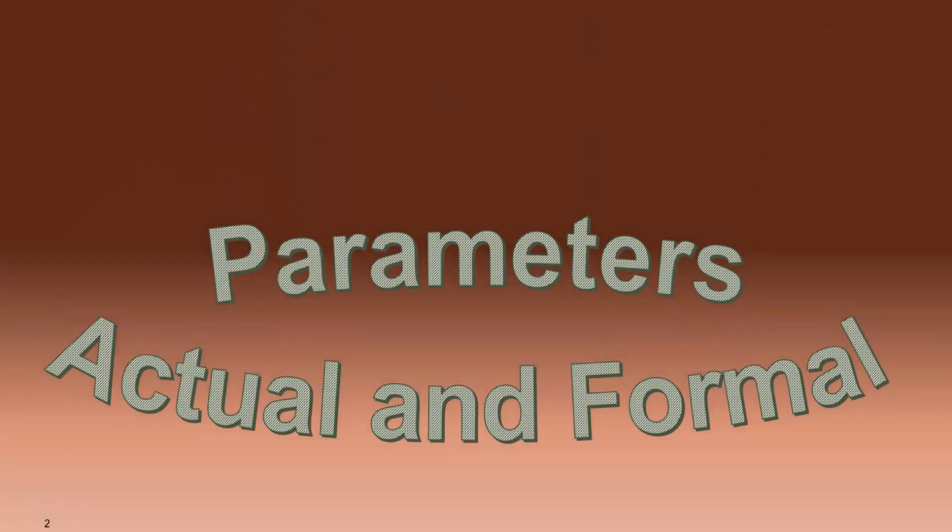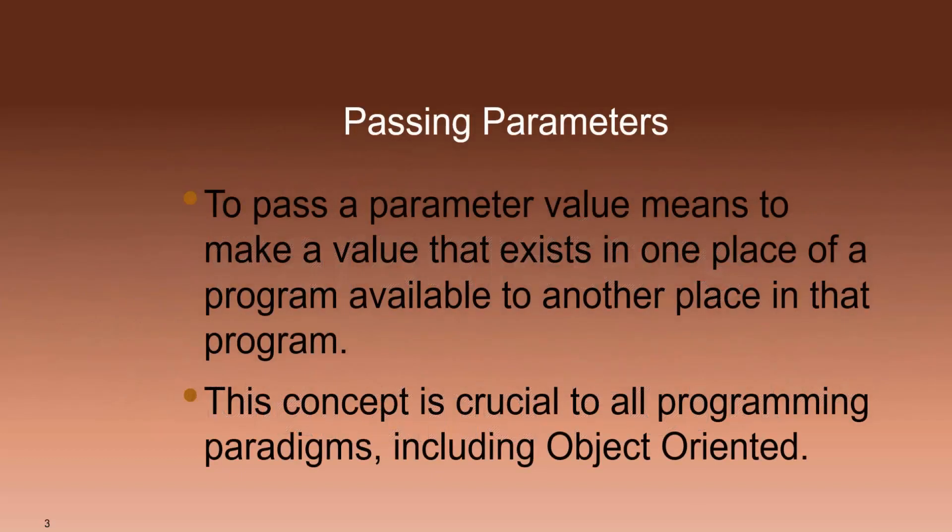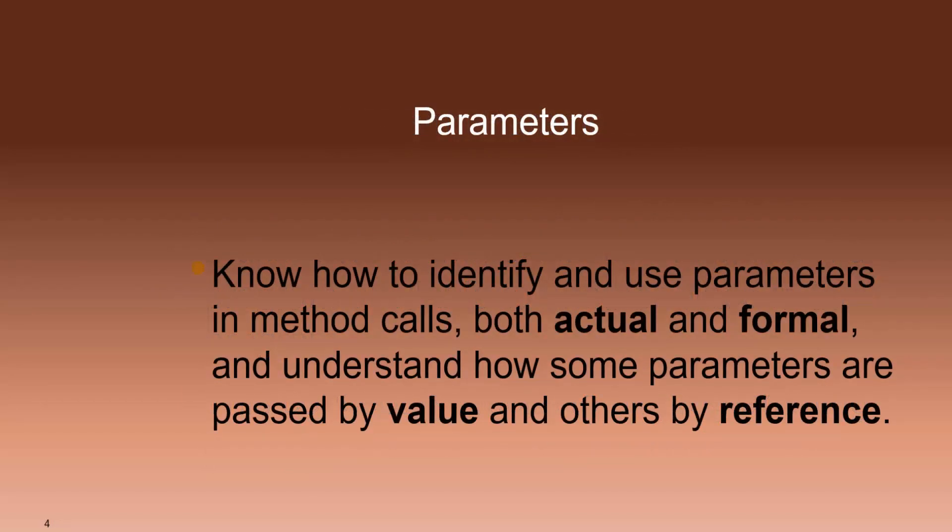Let's talk about actual and formal parameters. Parameters are an important feature of programming that must be clearly understood. They are used to pass information from one part of a program to another, a feature common to all programming languages and paradigms. And there are two main distinctions that are important for you to understand.